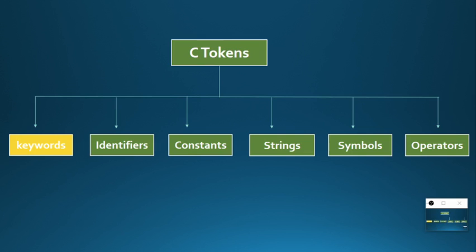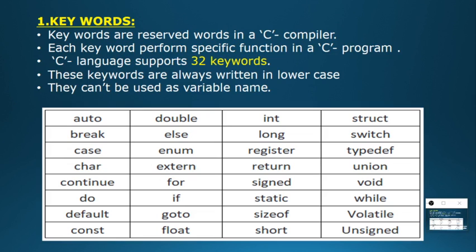Coming to our topic, C tokens. The first token we are going to discuss is keywords. A keyword is a reserved word and it is used to perform a specific function. We have 32 keywords and they are written in lowercase.